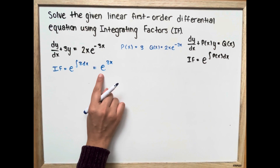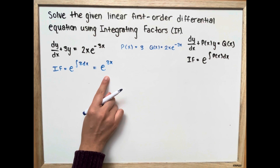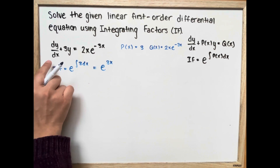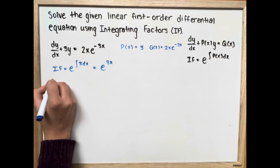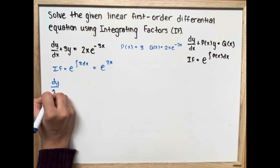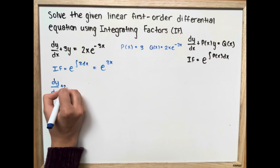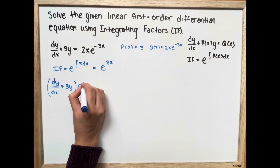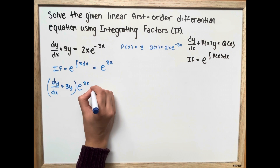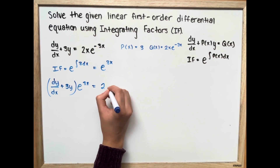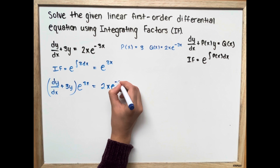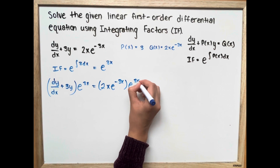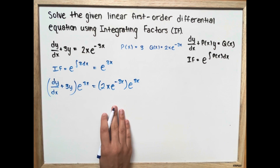Now we take our integrating factor and multiply our first-order differential equation on both sides. So we have dy/dx plus 3y, all multiplied by e to the power of 3x, which is equal to 2x times e to the power of negative 3x, multiplied by e to the power of 3x.